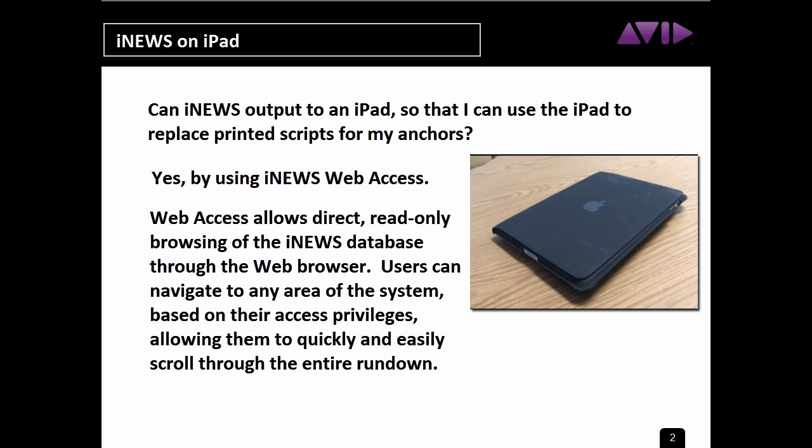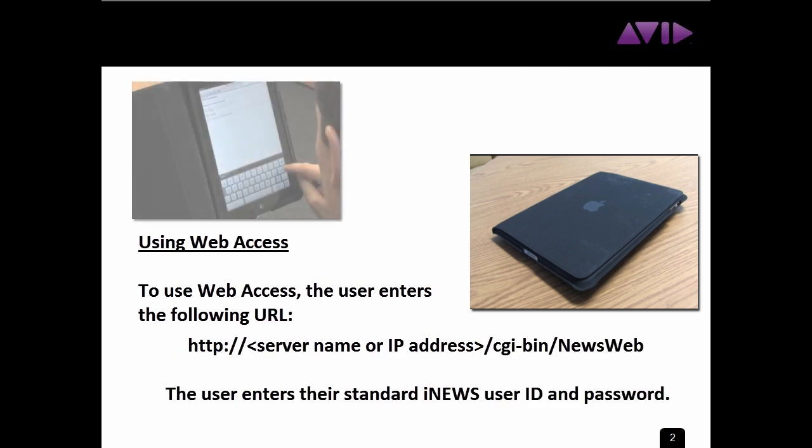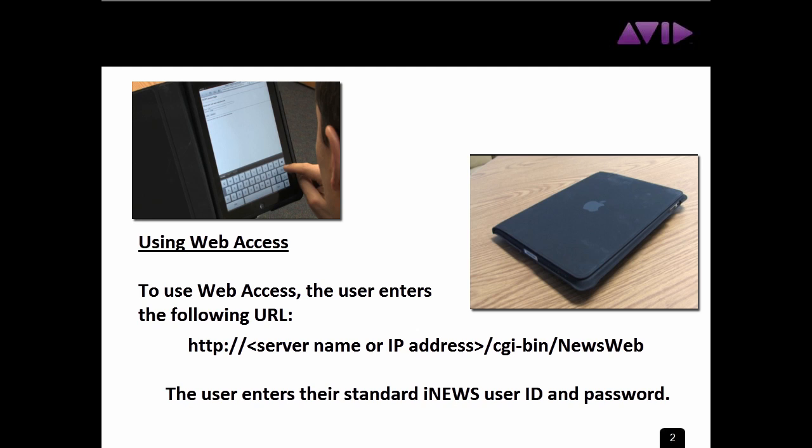Once they're in a script, they can move to the next script in the rundown through a hyperlink, allowing them to quickly and easily scroll the entire rundown. To use Web Access, the user enters the following URL. They will need the server name or IP address of their iNews servers.